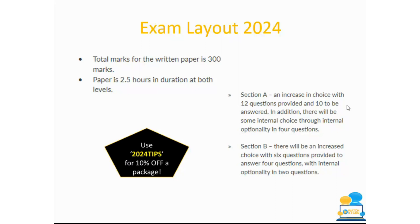Section B — there will be an increase here as well in terms of your options. There will be six questions provided and you have to answer four. There's also going to be internal options in two of those questions, so again lots of choice and lots of options there. Section A comprises short questions; Section B comprises longer type questions.